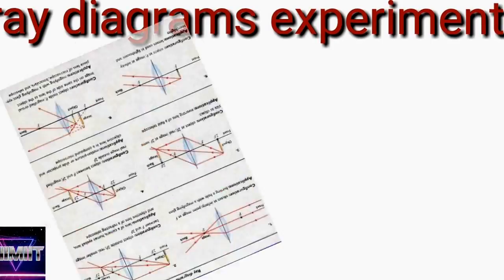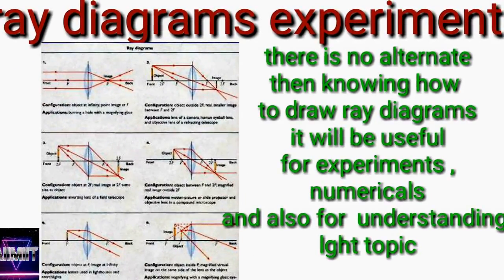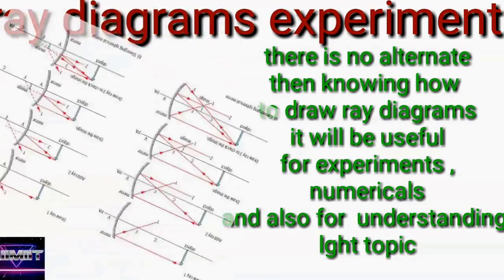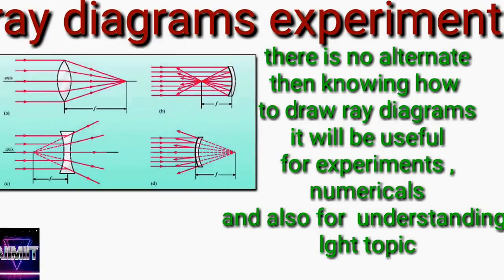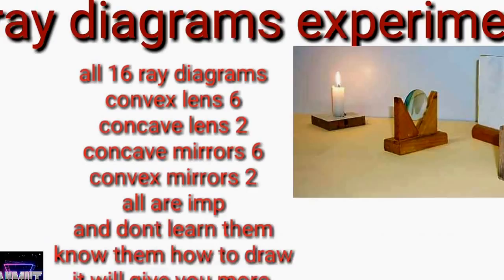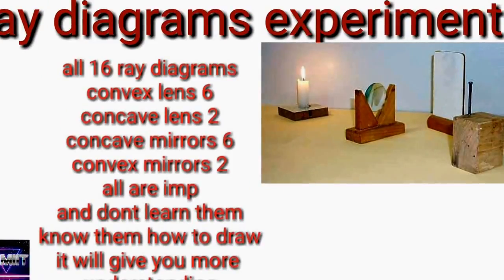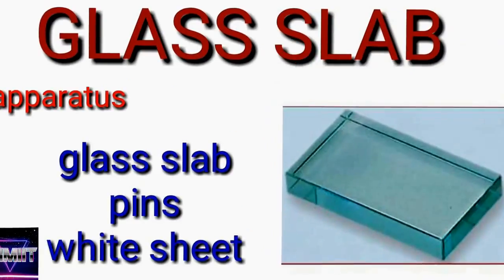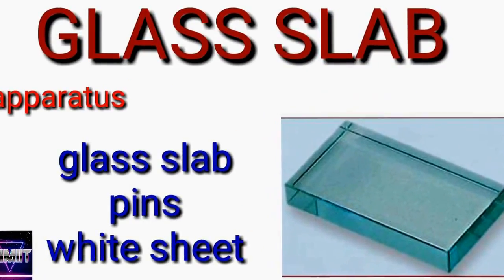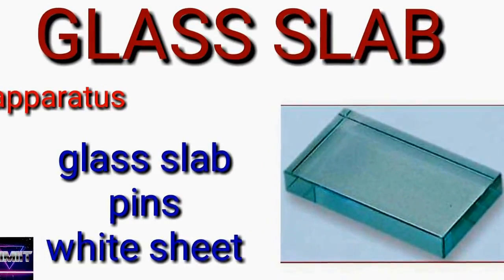Coming to the next experiment — we have ray diagrams. Children, there is no alternative other than practicing the ray diagrams. When the teacher is explaining in the laboratory, check out all the ray diagram settings and see if they are coming correctly. It will give you very good experience if you do the experiment clearly. All 16 ray diagrams — convex 8, lenses 8, mirrors 8 — you should be thorough. There is no other alternative for that.